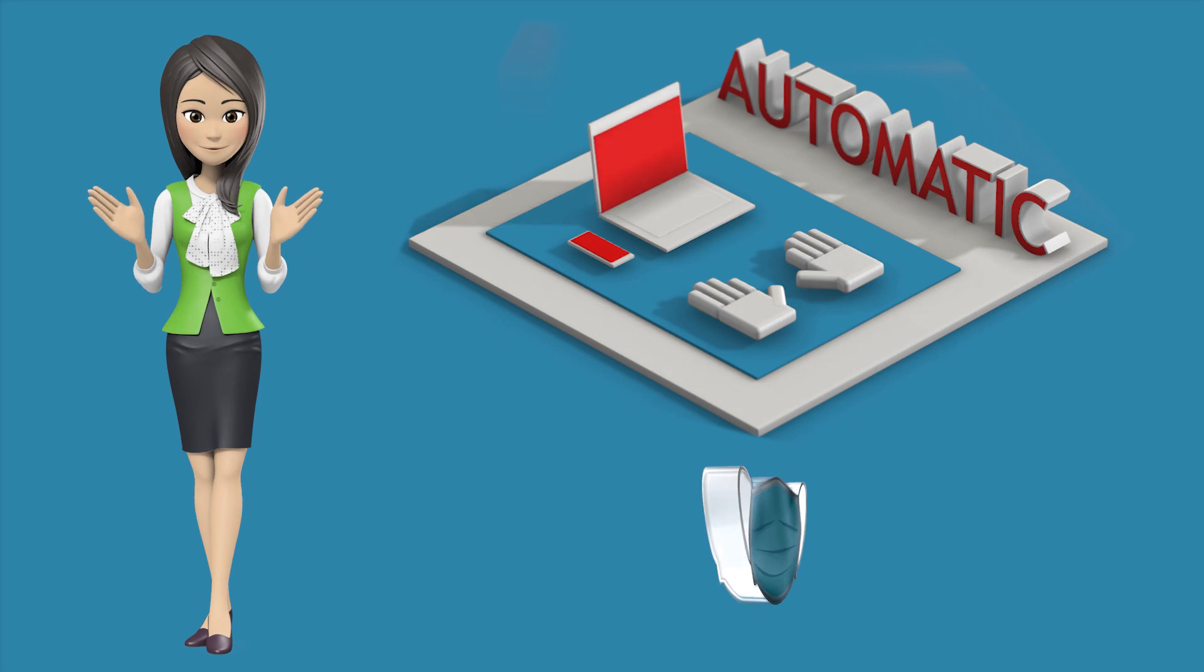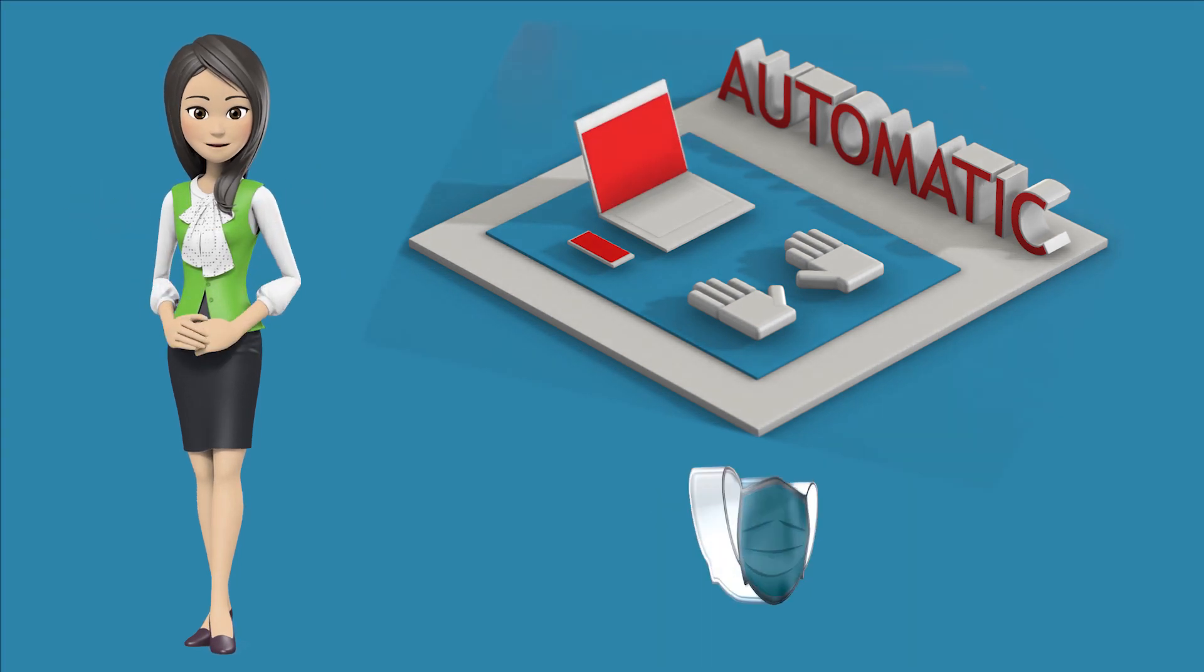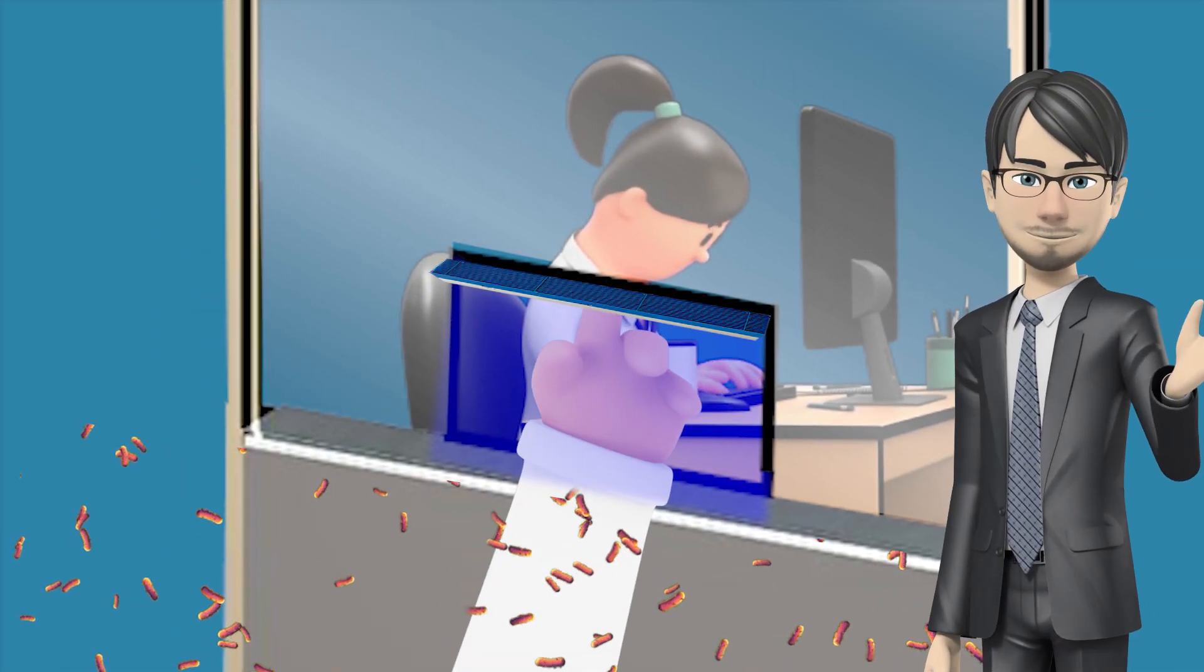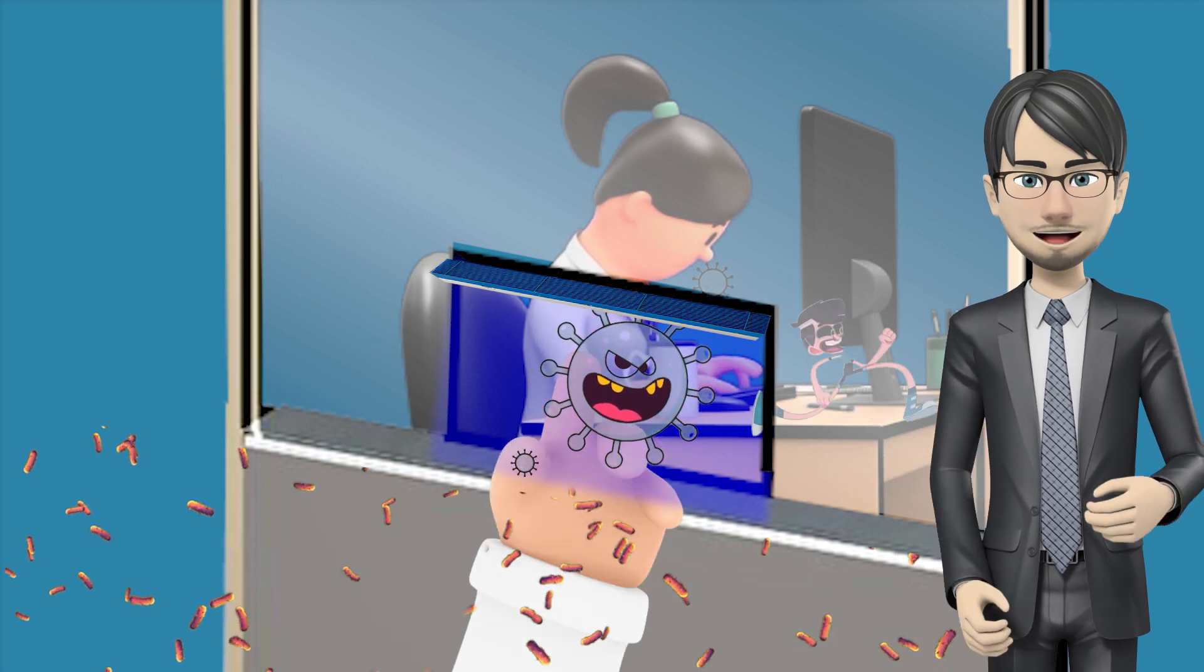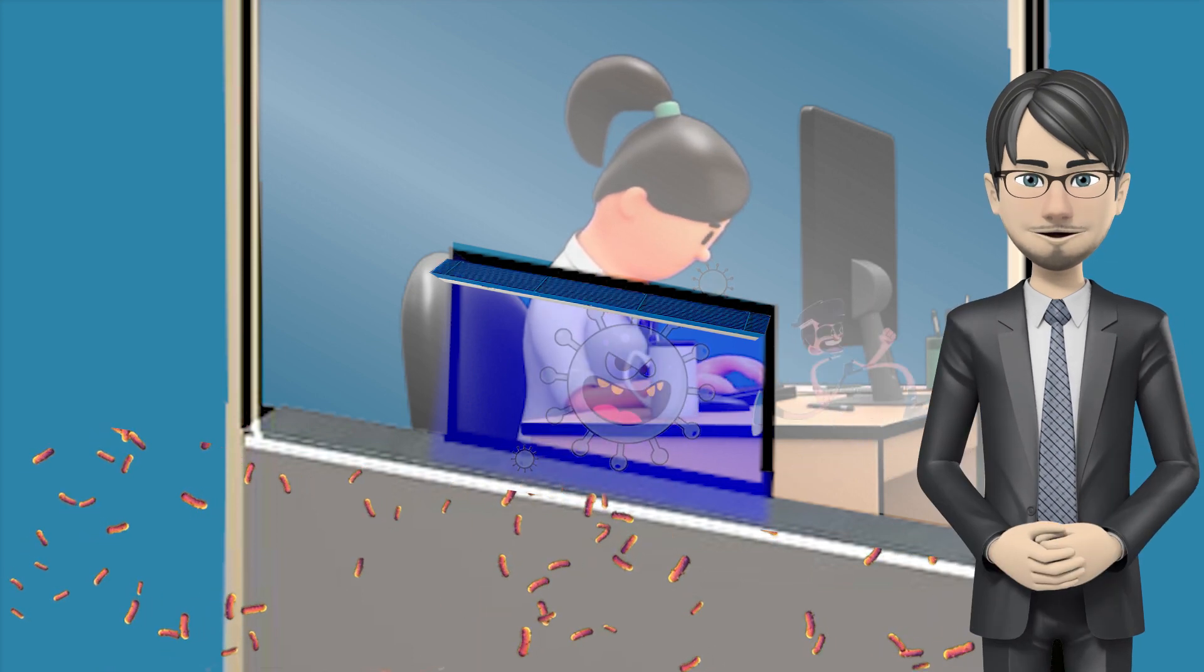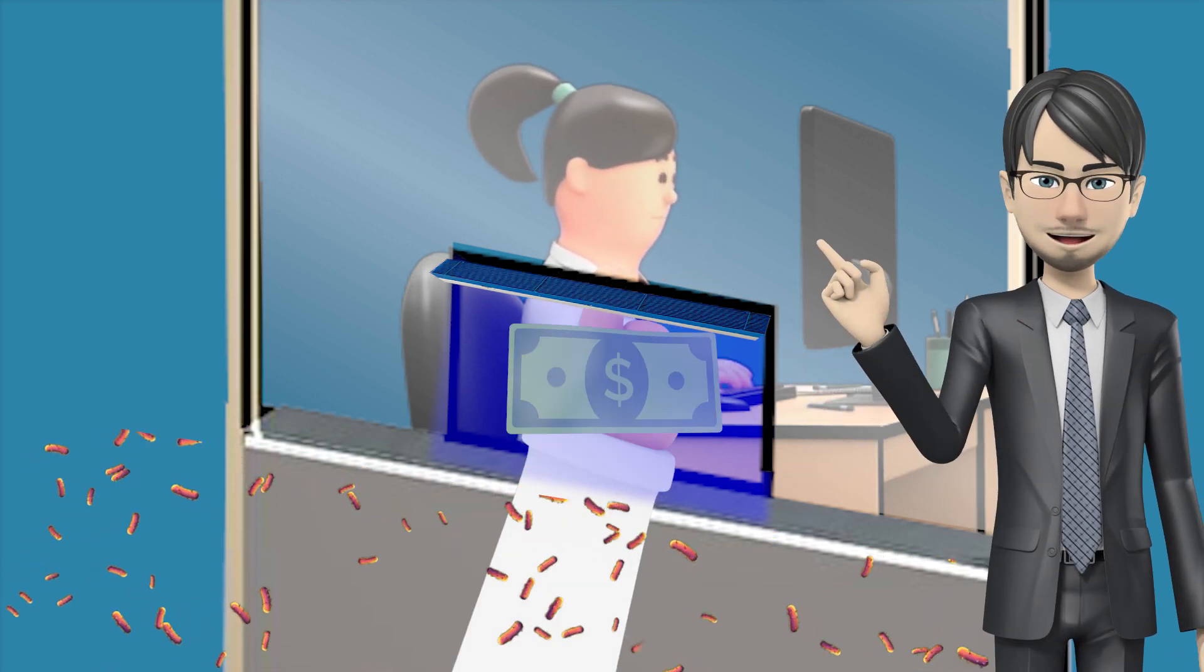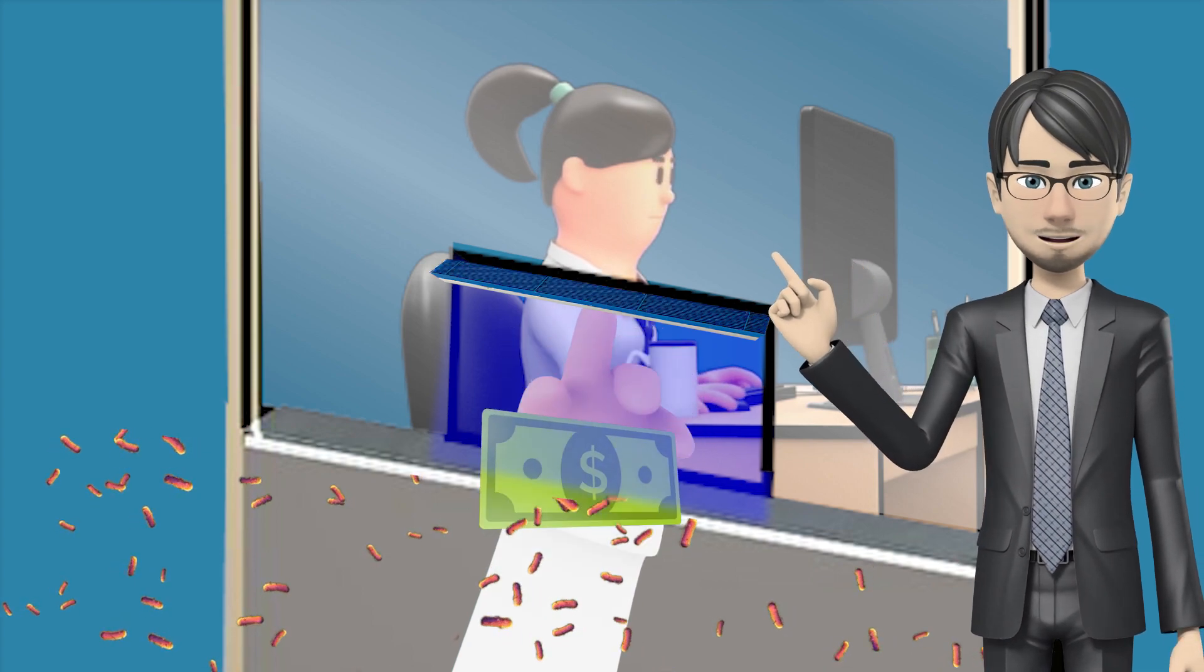No need for gloves or cleaning sprays. It's completely automated. It saturates the open transaction hole with human-friendly far UVC lighting that decontaminates everything, including the air, surfaces on items, objects, and currency.